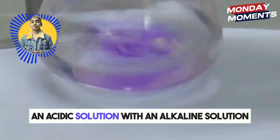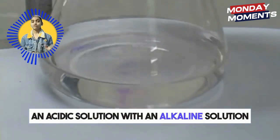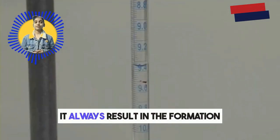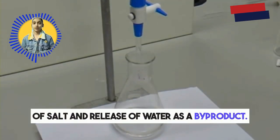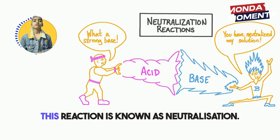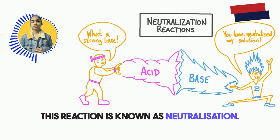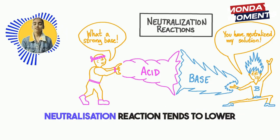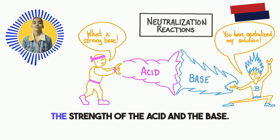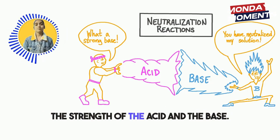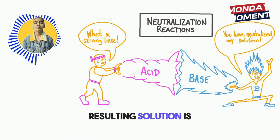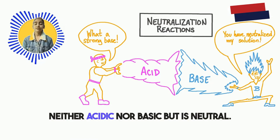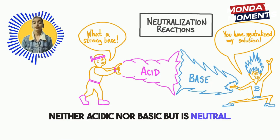When you mix an acidic solution with an alkaline solution, it drives the formation of salt and release of water. This reaction is known as neutralization. Neutralization Reaction tends to lower the strength of the acid and the base, therefore the resulting solution is neither acidic nor basic but is neutral.